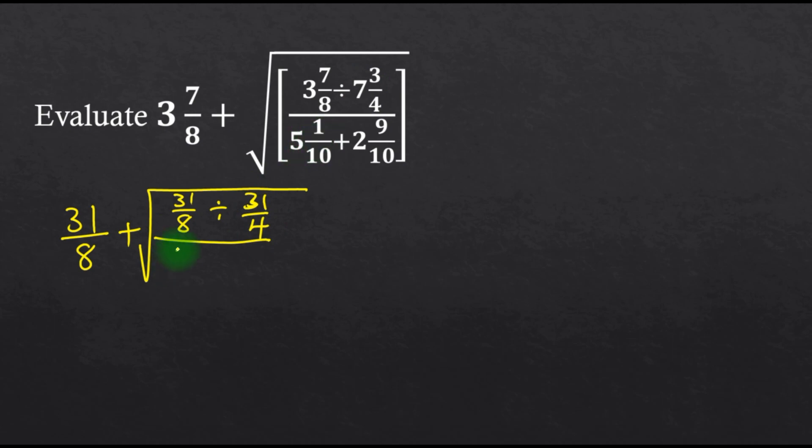Here we have 10 times 5 is 50, plus 1, that is 51 over 10, plus 10 times 2 is 20, plus 9, that is 29 over 10.